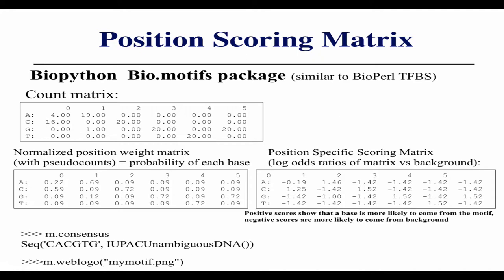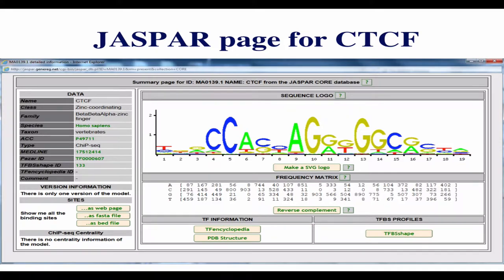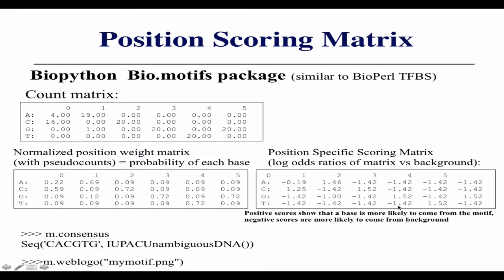You use the position-specific scoring matrix to give a score for every letter, the sum of those scores is the score for that position, and then you slide over one and rescore for as long a sequence as you want to test. The log odds score is the ratio of the frequency at a given position compared to an equal background score of 0.25 for each base. If your frequency is higher than 0.25, you get a positive score; if lower, a negative score. Each column of the position weight matrix should sum to one.